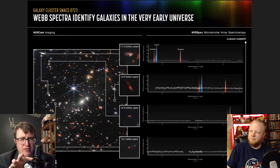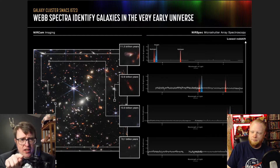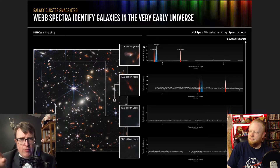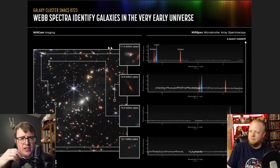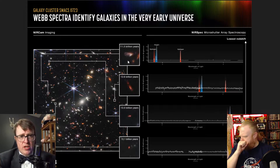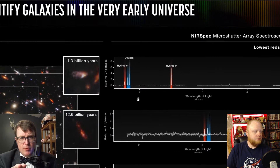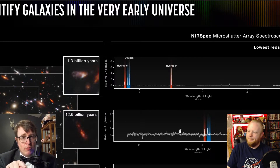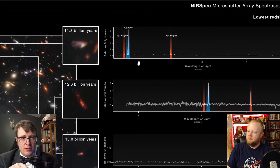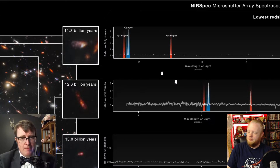What you're seeing on the left is that image we were just looking at. There are four specific galaxies that they've picked out with little boxes around them. Over on the right-hand side, they're showing you some chemical fingerprints and how those have been shifted. Stuff that is a mere 11 billion light years away — you can see features for hydrogen and oxygen. And if we go to a galaxy that's further away, say 12.6 billion light years away, you'll see those same features are shifted to the right. They're shifted to the red.